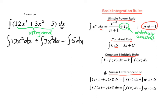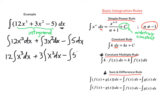Next, I'm going to use the constant multiple rule for a couple of the terms. Many times we have the coefficient of x to a power. The constant multiple rule says I can take the factor of 12 out of the integral and write it as 12 times the integral of x to the third dx. Similarly, we have 3 times the integral of x squared dx, minus the integral of 5 times dx, which is a constant.